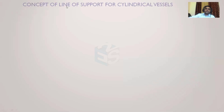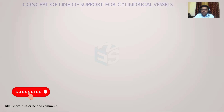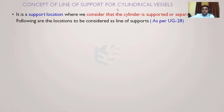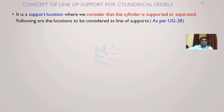We will concentrate upon one very important concept called the line of support. Whenever we are designing a cylindrical pressure vessel, the line of support concept is of utmost importance. It is a support location where we consider that the cylinder is supported or separated. For example, if the assumed thickness of 8 mm is not sufficient for external pressure, we have two options: increase the thickness, or add stiffener rings.